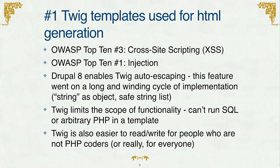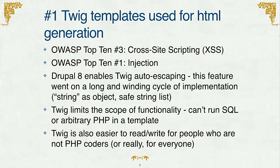Drupal 8 enables auto-escaping in Twig. What that means is that if you pass just a string to a Twig template, Twig will basically run the equivalent of check_plain on it — it will always be escaped. There are very few routes to get unescaped text into Twig. You can't have themers running SQL queries or PHP, so they can't open up vulnerabilities there. And Twig is also a lot easier to read and write, so this is a win for developer experience too.